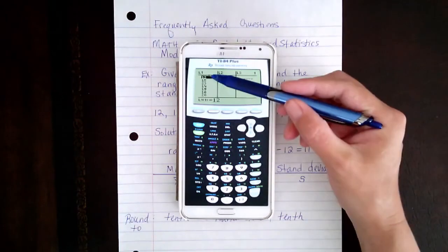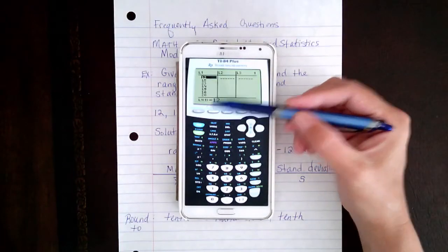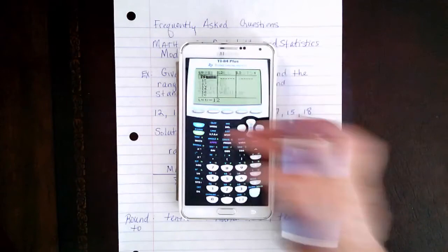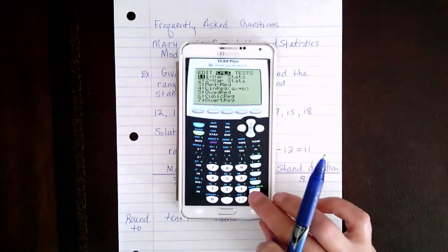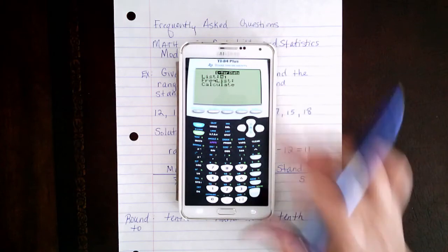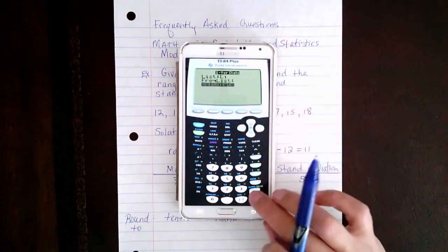Enter all of the data in list 1. Hit stat again. Go over to calculate. Leave it on one variable stat. Hit calculate.